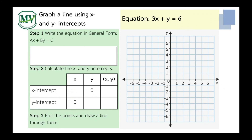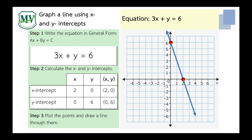Problem number 2: graph 3x plus y equals 6. Copy the equation as it is. Solve for the x and y intercepts. If y equals 0, x equals 2. If x equals 0, y equals 6. Plot the points on the Cartesian plane: x-intercept (2, 0) and y-intercept (0, 6). Connect the points with a straight line. This is the graph of 3x plus y equals 6.